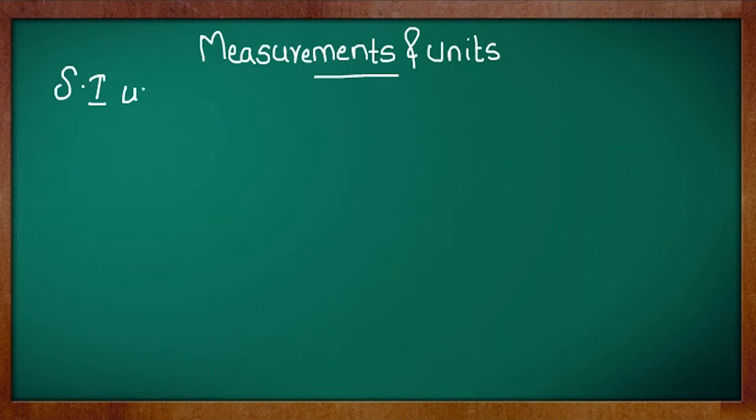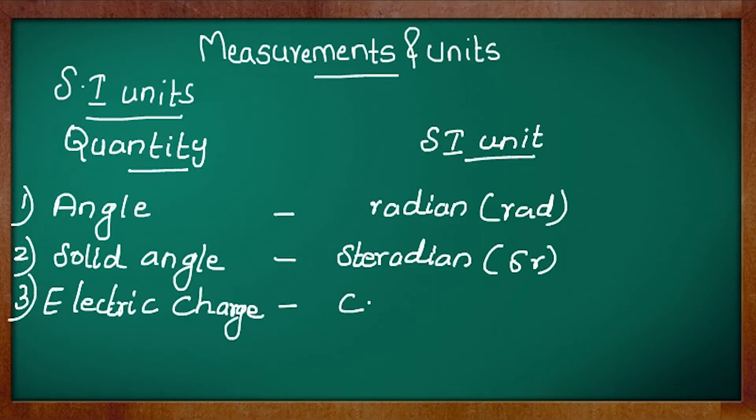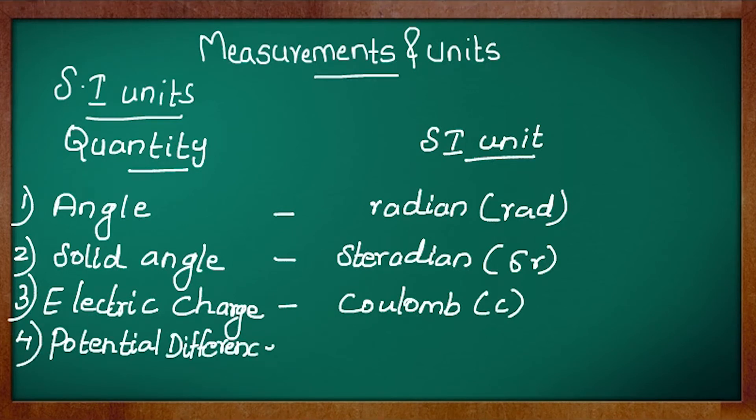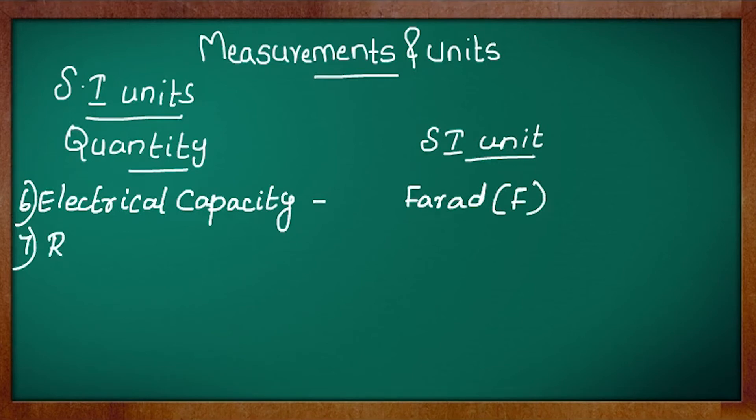SI units of some physical quantities: angle is radian, solid angle is steradian, electric charge is coulomb, potential difference is volt, electric resistance is ohm, electrical capacity is farad, radioactivity is Becquerel, and conductance is Siemens.